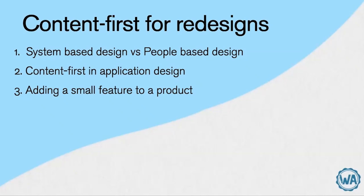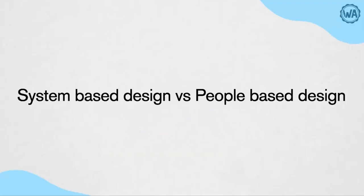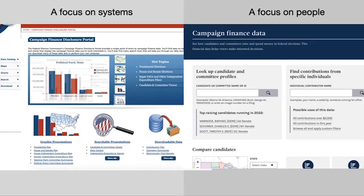Let's show some examples. We're going to kick it off with what I call system-based design versus people-based design. This is the project that Amelia Barnes presented in her process interview, where she worked for the United States government redesigning the campaign finance website for the Federal Election Commission. What they started with was a design focused on systems, and what they ended up with — through content first design — was something focused on how people think about it.